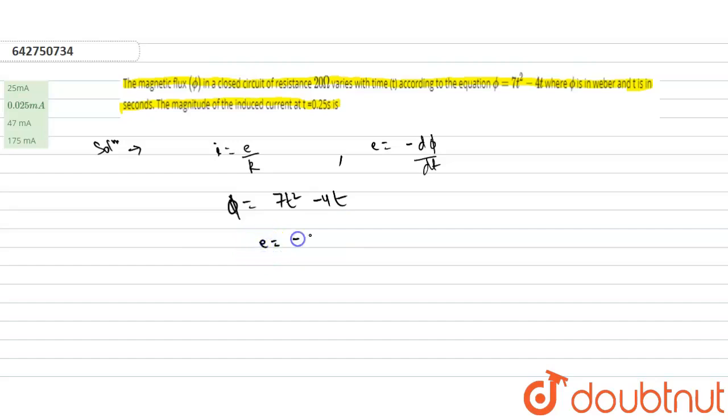e is equal to minus d phi by dt, so it will give minus 14t plus 4. So t is given...